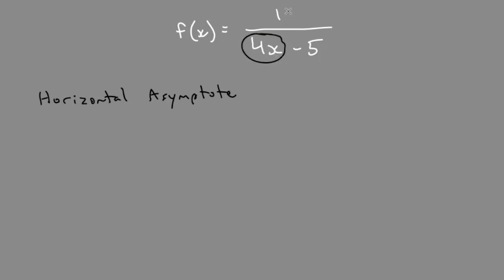The leading coefficient in the bottom is 4, and in the top it would be 0x. So when we just have a number in the top, we wouldn't use that. We have to use the highest degree of x. We would imagine a 0x in the top.